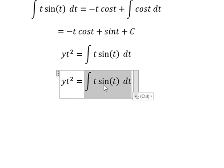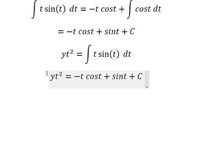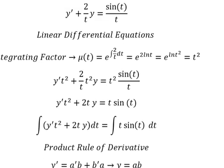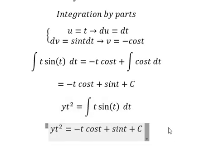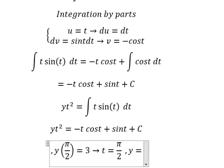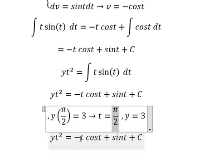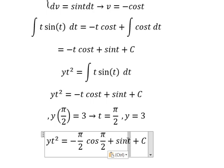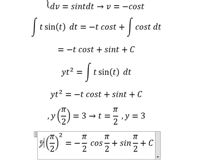Now we return back to our equation — the integration of the left side gives us this expression. Now we have the initial conditions. That means when t equals pi over 2, y equals 3. So I will substitute t equals pi over 2 into the equation, and substitute y equals 3, so we can find the value of C.